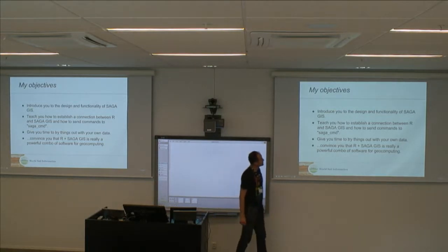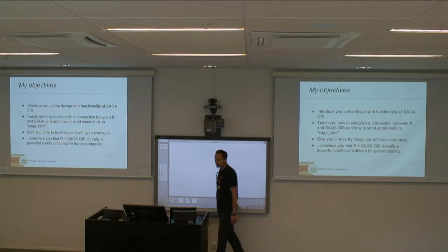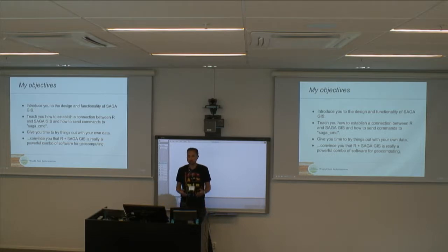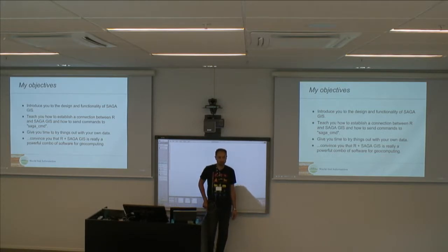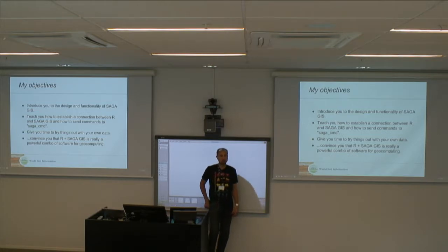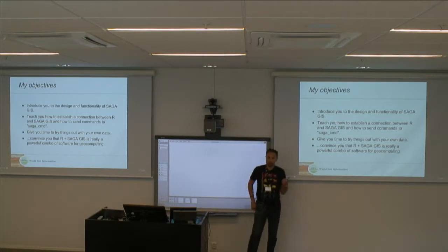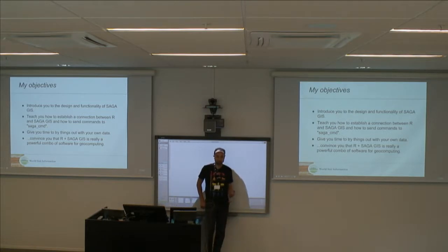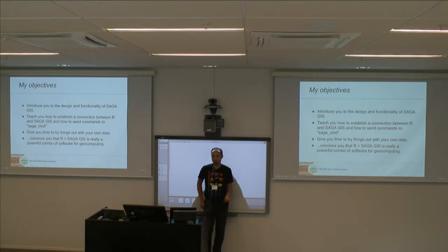My objectives for today: introduce SAGA GIS, its basic design and functionality, and work with the SAGA GUI to open layers, visualize rasters, do overlays, and inspect properties. I really like SAGA GIS because it's very light — you start it quickly and work with it quickly. It can load and crunch big data. The raster package won't be able to do that, but SAGA GIS is a C++ implementation made to work with big data.